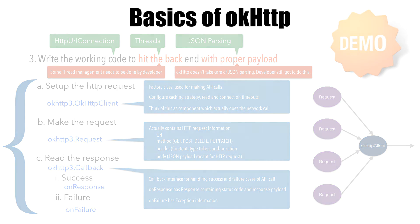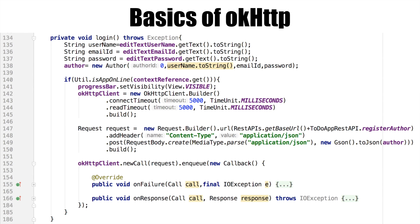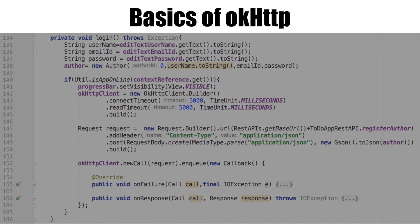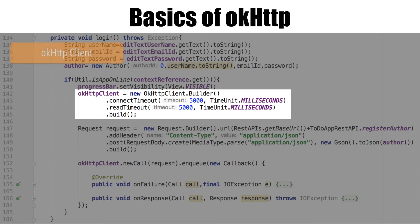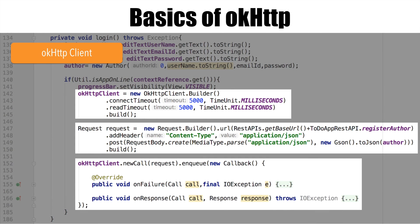In this particular video, we will try to understand how this code can be refactored. If you have a look at the current existing code that we have written, the first aspect is creating the OkHttp client, and the second aspect is creating the request and then making a call using that particular request.